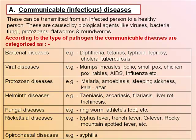Viral diseases include mumps, measles, polio, smallpox, chickenpox, rabies, AIDS, and influenza. Protozoan diseases include malaria, amoebiasis, sleeping sickness, and kala-azar. Helminth diseases include taeniasis, ascariasis, filariasis, liver rot, and trichinosis.